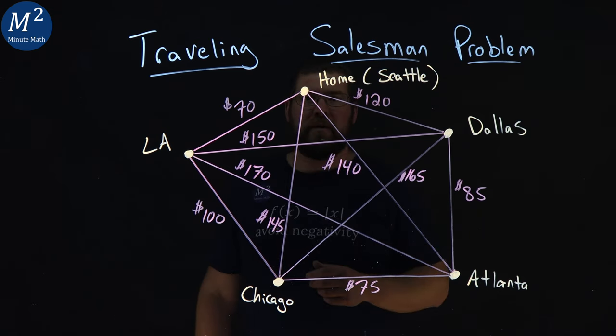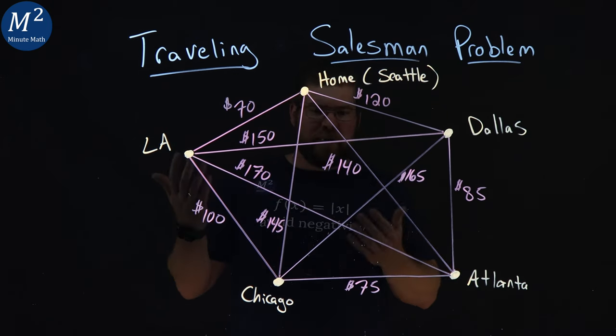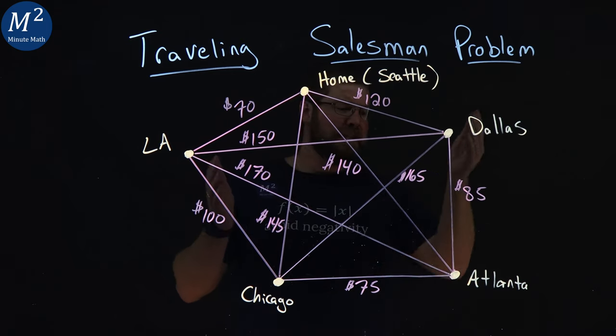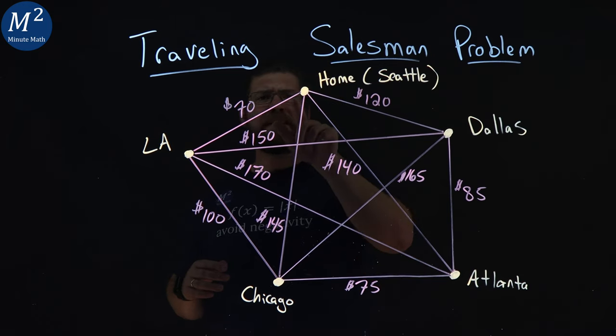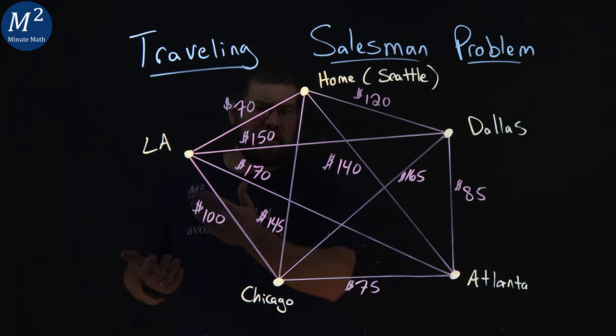If we start at home here, home in Seattle, then we have to travel to our next place. We have so many different flights—flights from home to Chicago or LA, Dallas, Atlanta—but we want to find the least cost. And we can see that here from home to LA, it's a $70 flight. So we can choose this.